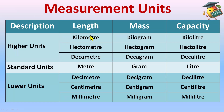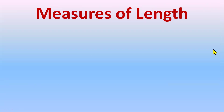You need to remember the sequence exactly for conversions. For length, the highest unit is kilometer and the lowest is millimeter. For mass, the highest is kilogram and the lowest is milligram. For capacity, kiloliter is the highest and milliliter is the lowest.